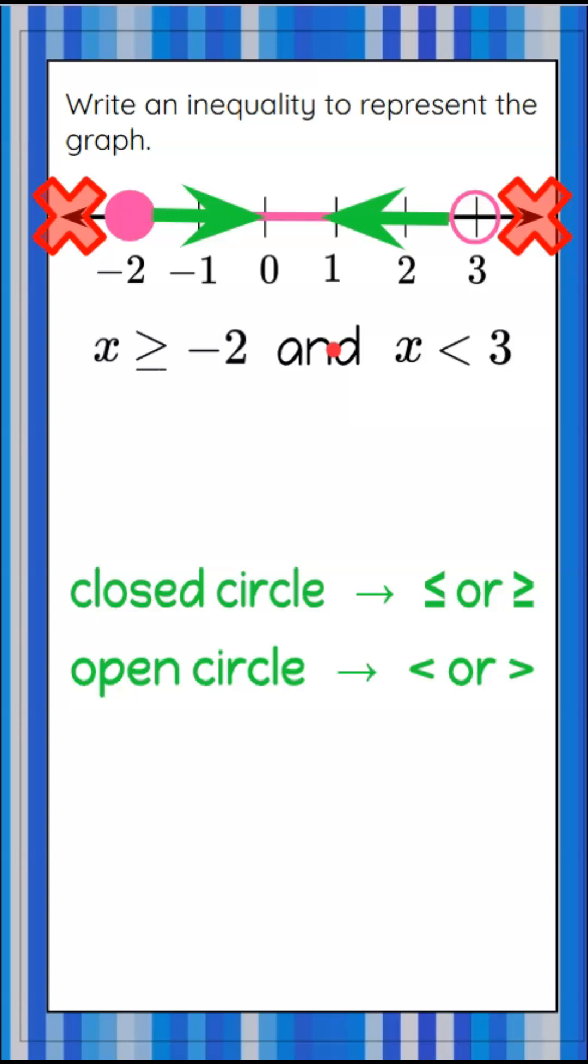Now there's one other way we could write this compound inequality. We can flip the symbol and the variable. So x is greater than or equal to negative 2 when you read it backwards. So negative 2 must be less than or equal to x, and x must be less than or equal to 3 is another way to write an AND inequality.